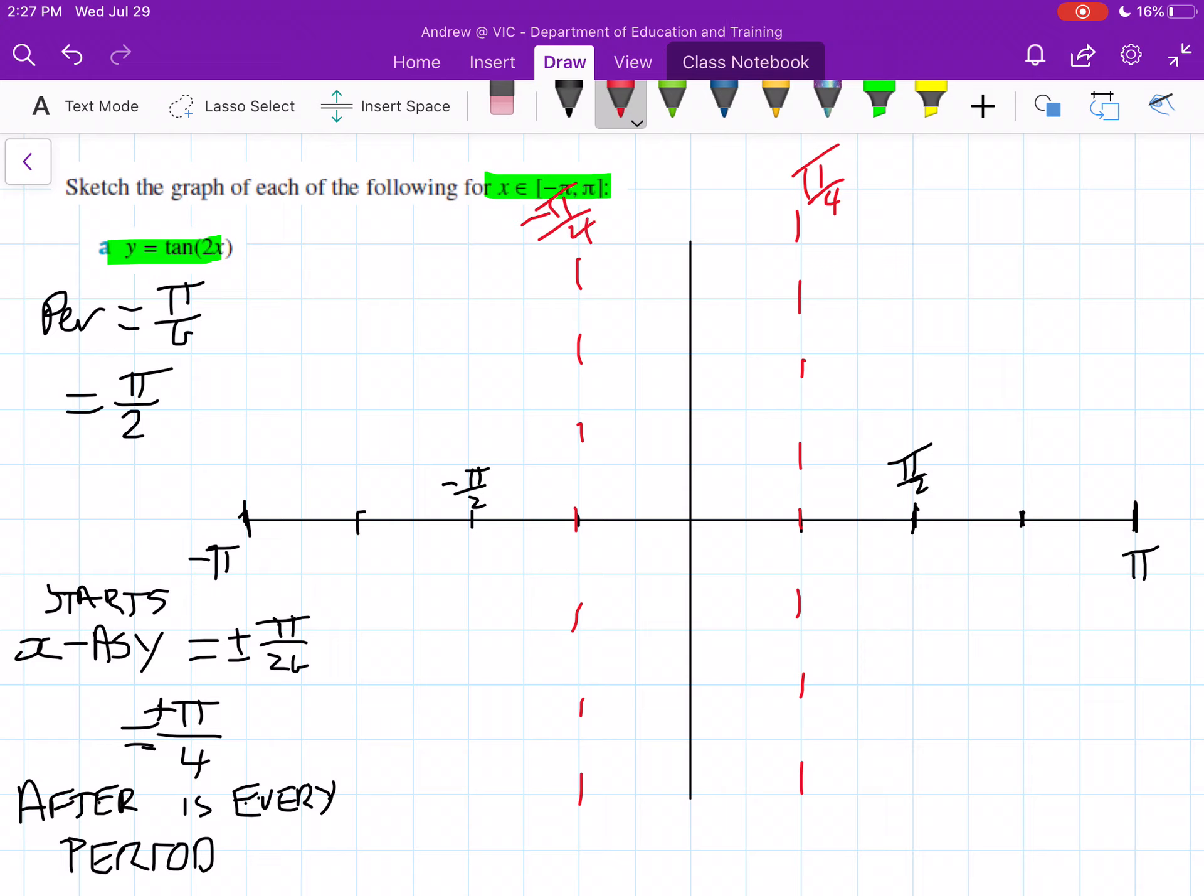So then our next one is after every period. Our period is π/2, so π/2 is two of these little dashes here. That makes it a bit easier to recognize that this is going to be our next one here in the positive scale and our next one in the negative scale is going to be here.